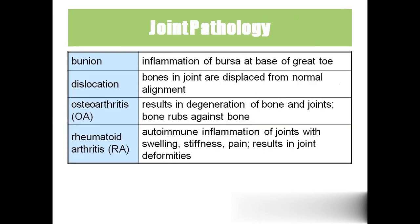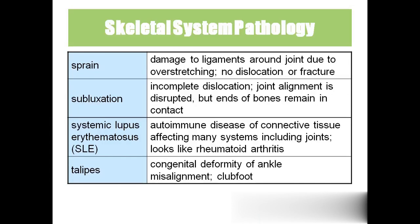Bunion is inflammation of the bursa of the great toe, treated with bunionectomy — surgical removal of the bursa. Dislocation means the bone comes completely out of the joint. Osteoarthritis occurs in old age, while rheumatoid arthritis occurs in young age due to the rheumatoid factor — it is an autoimmune condition where the body's own antibodies attack its own antigens. Both involve stiffness, swelling, and pain. Sprain means damage to a ligament; strain means damage to a muscle.